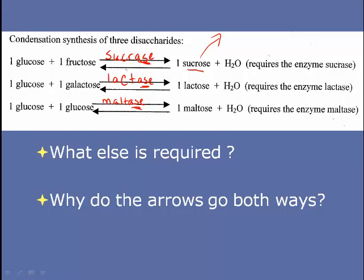On the other hand, if you ate a big sugary candy bar full of sucrose, you would have a rush of sucrose in your digestive system, and the digestive enzyme sucrase would break down sucrose into glucose and fructose. You would never reach equilibrium because in the digestive system, the glucose and fructose are absorbed into cells lining the digestive cavity and whisked away into the bloodstream. So sucrase continues to break down sucrose, and since glucose and fructose never accumulate, they are not converted back to sucrose.